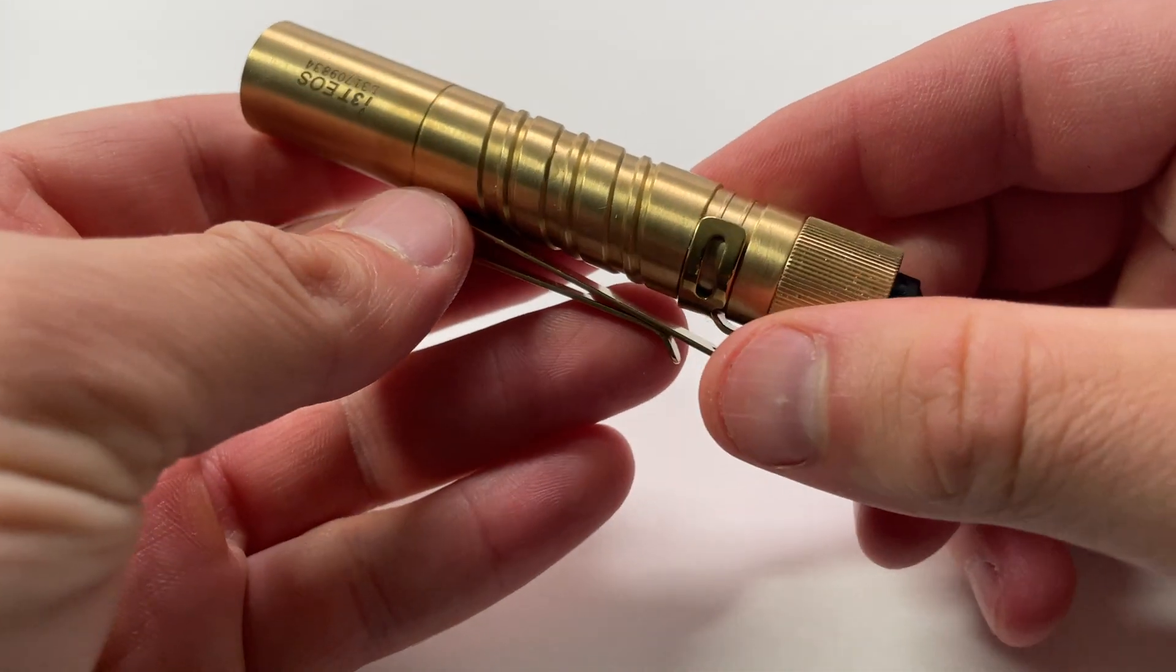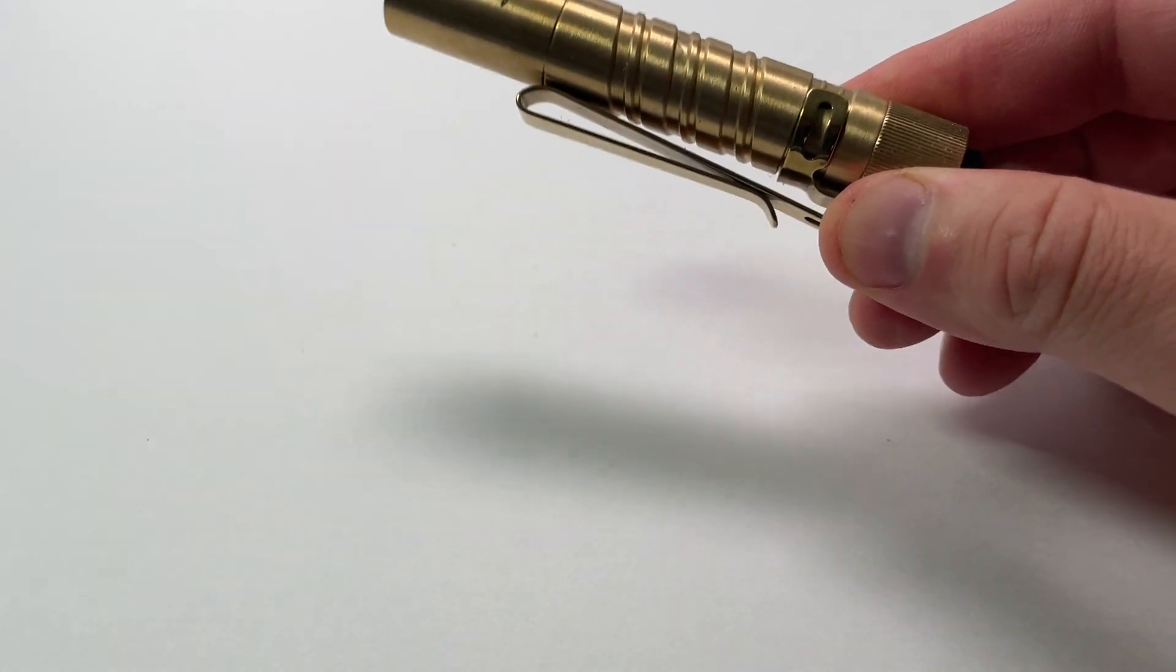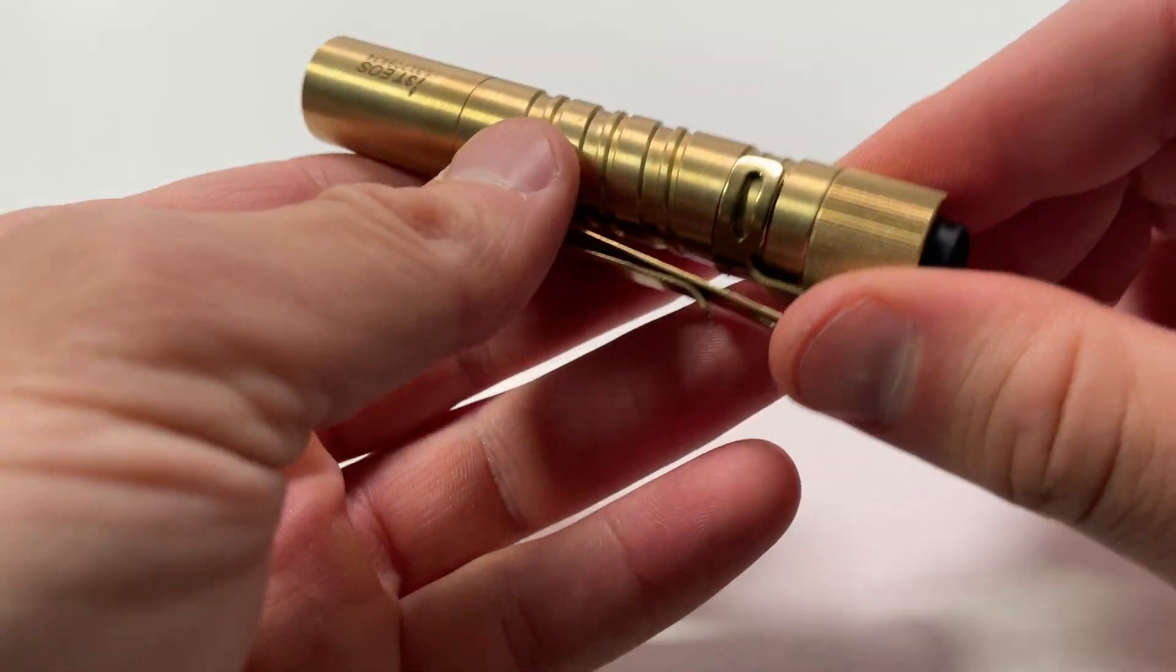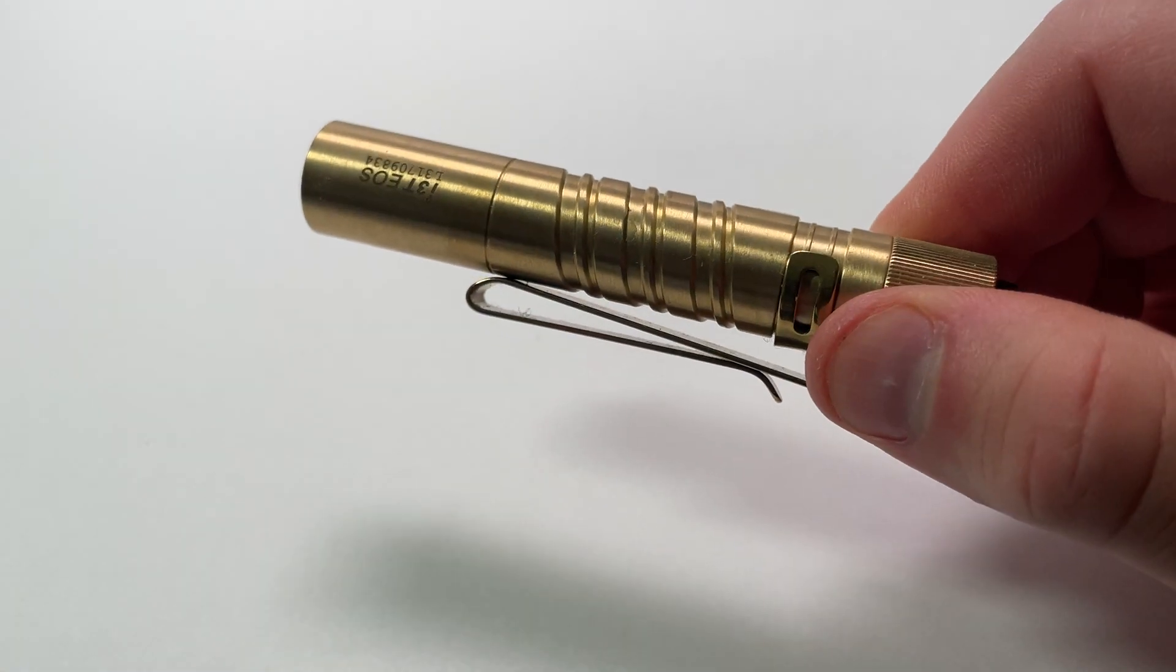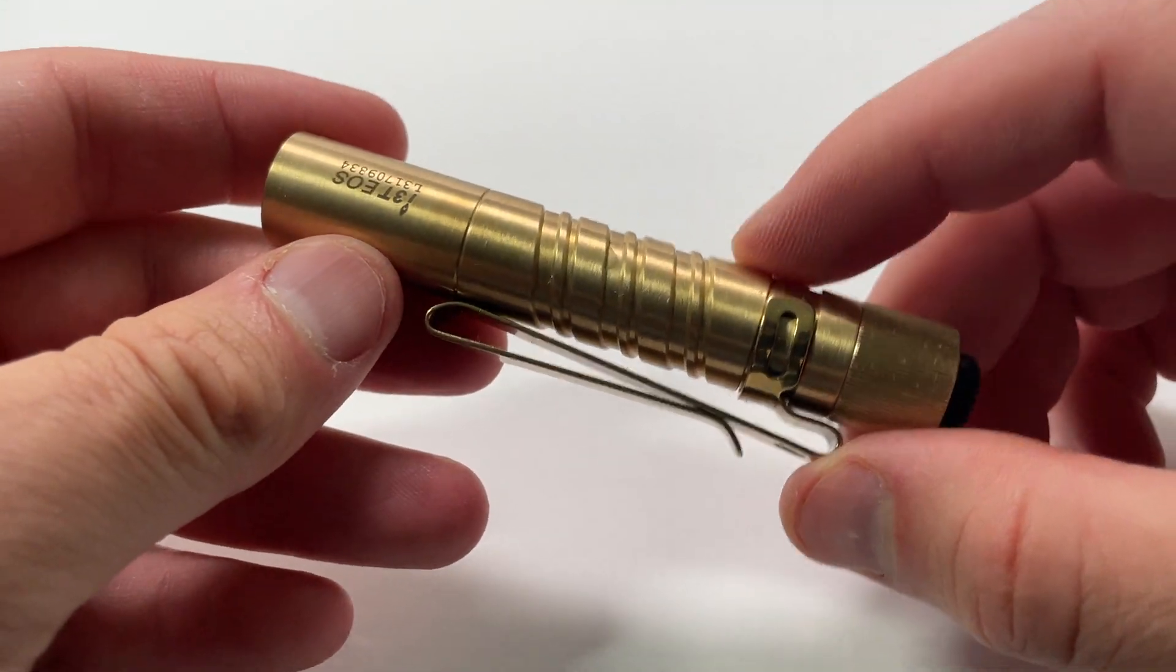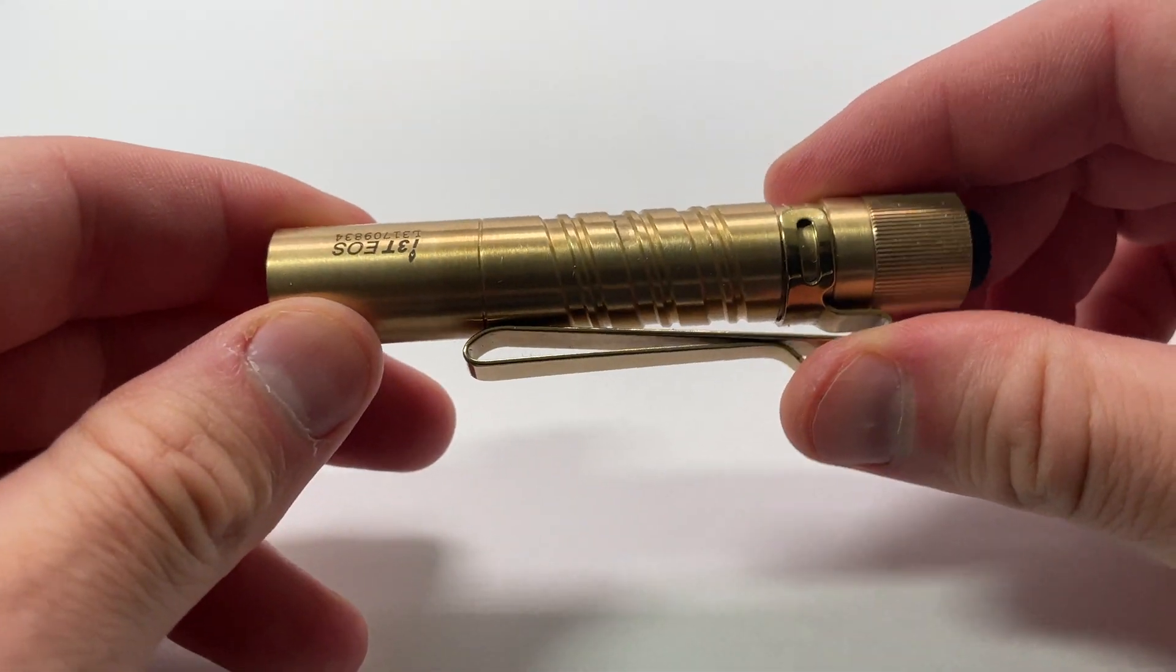And what those modes do is they give you kind of an everyday type mode which will last for, I think, I've seen about eight hours of battery life from the standard mode. And then the high mode, which is really blasting, you know, for a light of this size. That's 180 lumens in full light.